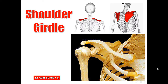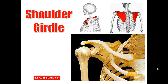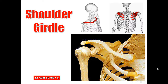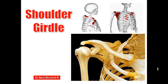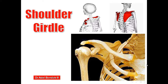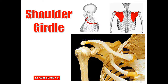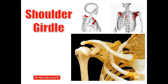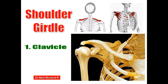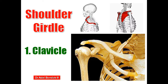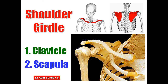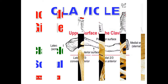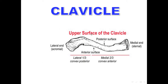Good morning. This is Dr. Adel Bondok, Professor of Anatomy and Neuroscience, Mansoura University, Egypt. Today I will talk about the special features of the bones of the shoulder girdle, which are the clavicle anteriorly and the scapula posteriorly.